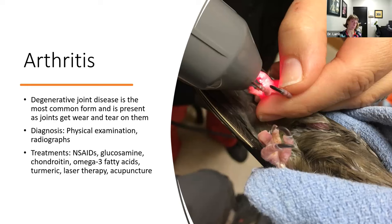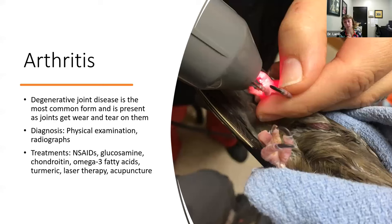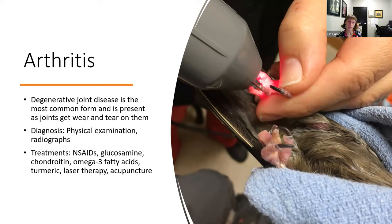I also recommend radiographs to assess how severe the arthritis is and what the bones are actually doing, and also to rule out other conditions. Joint infections can limit range of motion and mimic arthritis, and some cancers can affect joints and bones — though not super common in birds, they do happen. Early stages of cancer can sometimes appear like degenerative joint disease, so radiographs help clarify what's going on.